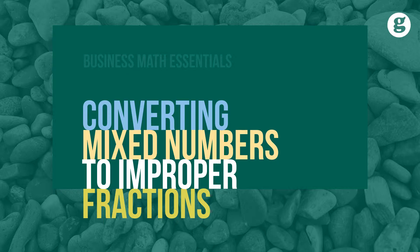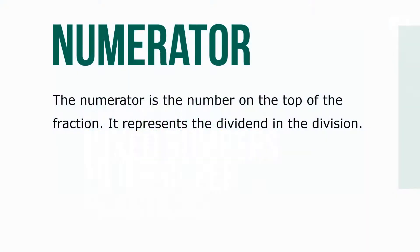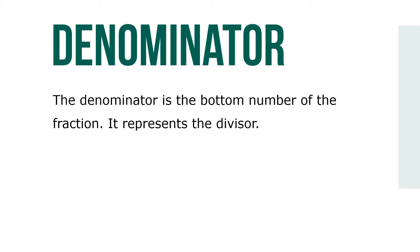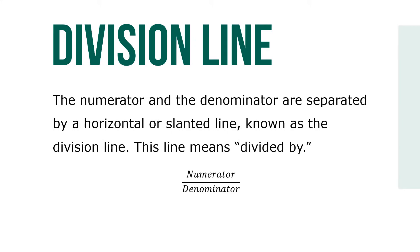Technically, fractions express the relationship between two numbers set up as division. The numerator is the number on top of the fraction — it represents the dividend in the division. The denominator is the bottom number of the fraction — it represents the divisor. The numerator and the denominator are separated by a horizontal or slanted line, known as the division line.